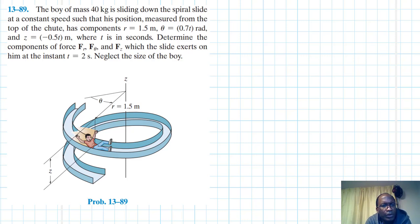Hello, I welcome you all. The problem reads that the boy of mass 40 kg is sliding down the spiral slide at a constant speed such that his position measured from the top of the chute has components r equal to 1.5 meters, theta equal to 0.70 rad, and z equal to minus 0.50 meters, where t is in seconds. Determine the components of force Fr, F theta, and Fz which the slide exerts on him at the instant t equals 2 seconds. Neglect the size of the boy.